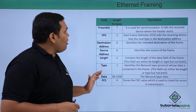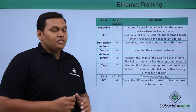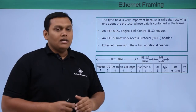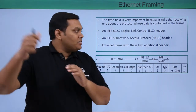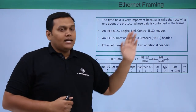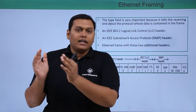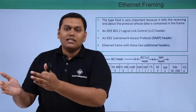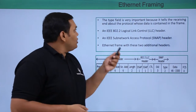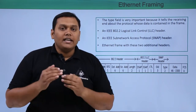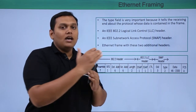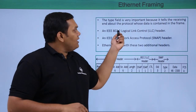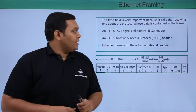This is the frame structure defined by IEEE. The Type field is very important because it tells the receiving device about the protocol whose data the frame contains. The network layer has various protocols with specific functions, and this Type field informs the receiving device about those protocols.